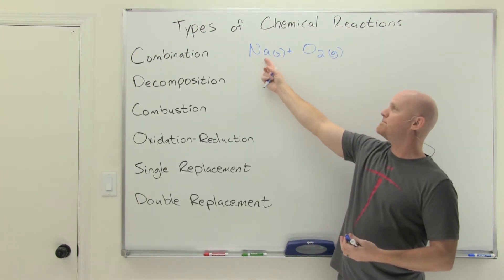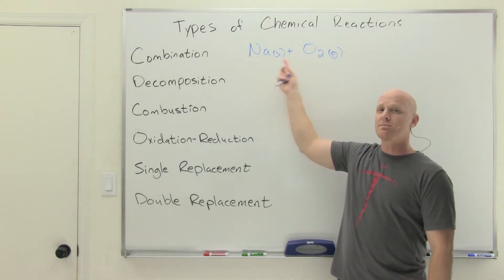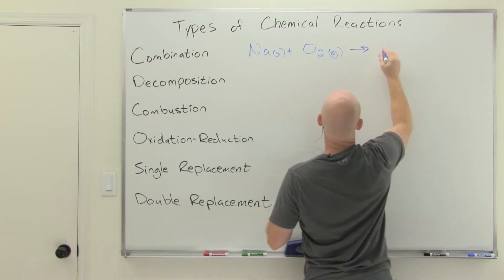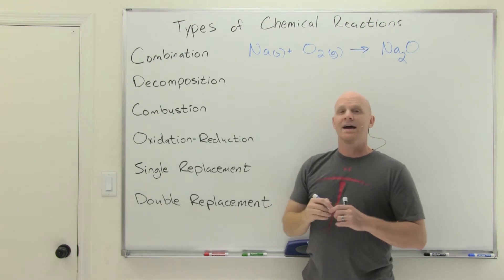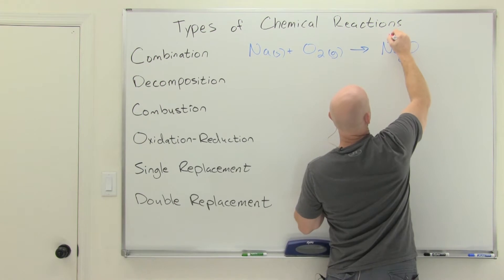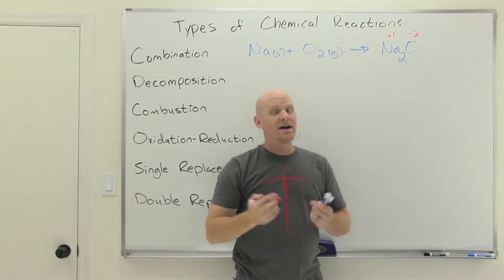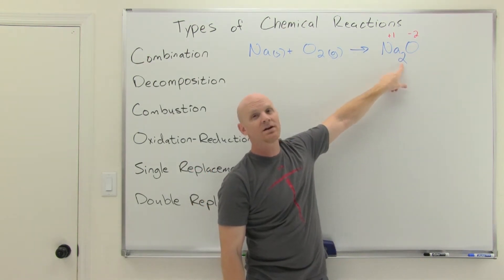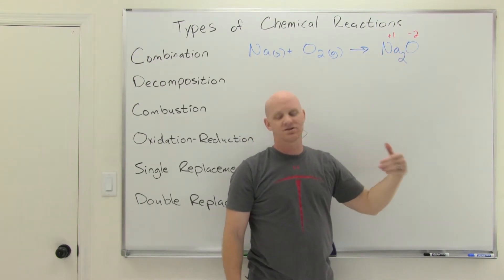When you mix a metal — sodium is on the left-hand side of the periodic table — and a non-metal — oxygen is way over to the right-hand side — you're going to form an ionic compound. The ionic compound between sodium and oxygen should have the formula Na2O. You'd predict that by knowing sodium is +1 and oxygen is −2 based on their positions on the periodic table. To get a proper ionic compound the charges should balance, which is why we put a subscript 2 for the sodiums so the overall charge is zero.